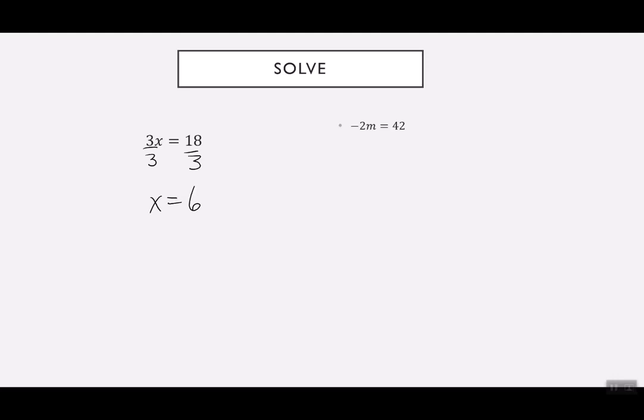I have negative 2m equals 42. Doesn't matter that it's negative 2. I'm still going to divide because the negative 2 and the m were being multiplied. When I divide, this gives me m is negative 21.